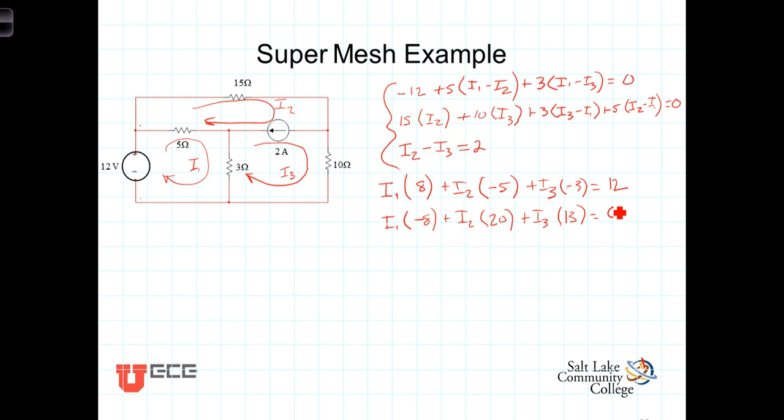Finally, our third equation is I2 times 1, plus I3 times a negative 1, equals 2. And we have our three equations and three unknowns. It's all ready for your calculator or however you choose to solve your system of three equations and three unknowns. And when you do, we get the following.